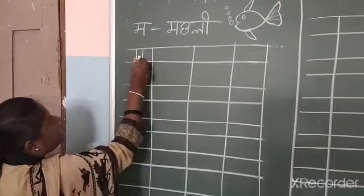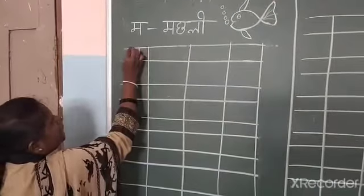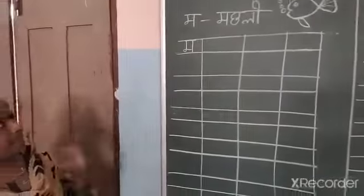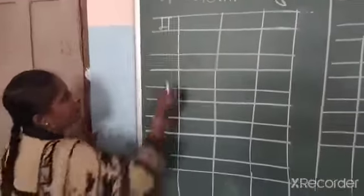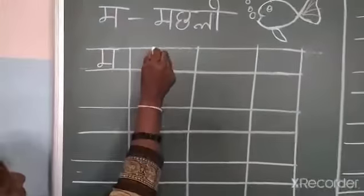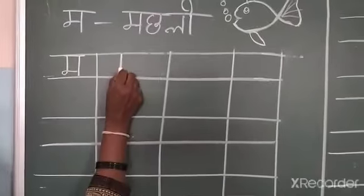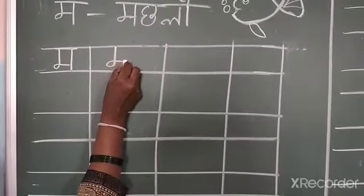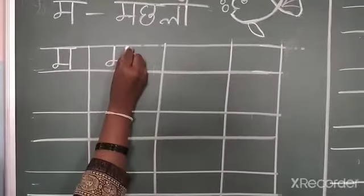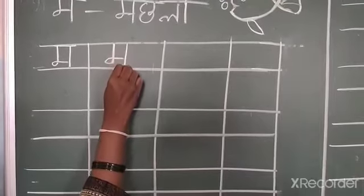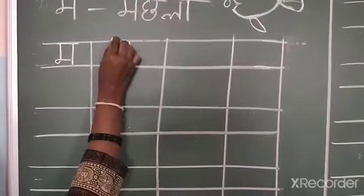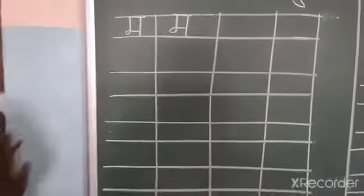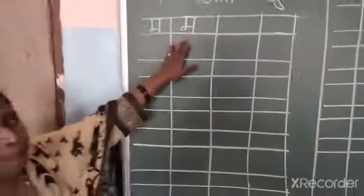Again, you draw one standing line and on the outside you draw one slipping line. So this is the letter म. See one more time: draw one standing line, make one knot, drag this line, draw one standing line, and on the outside draw one slipping line. So, this is the letter म.